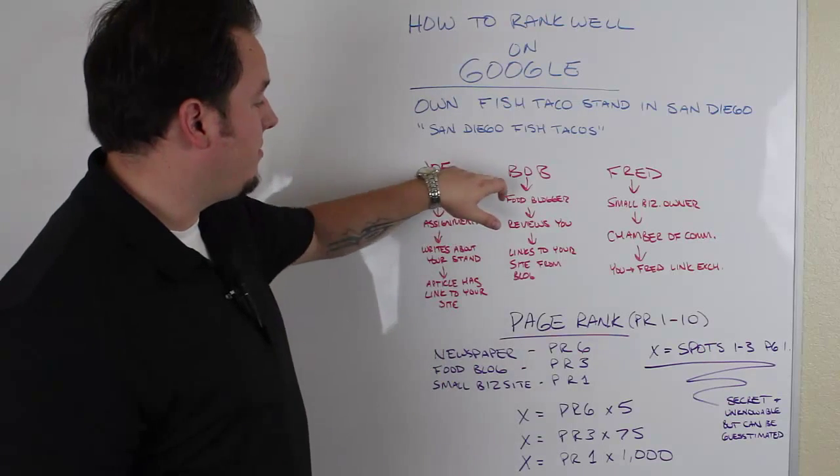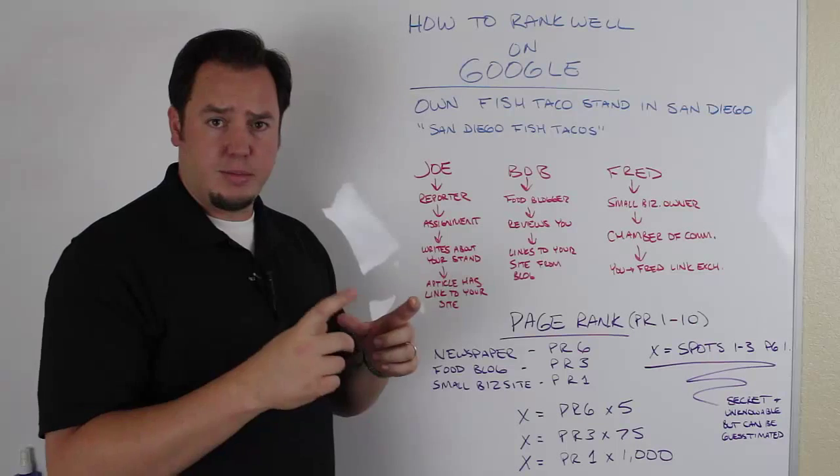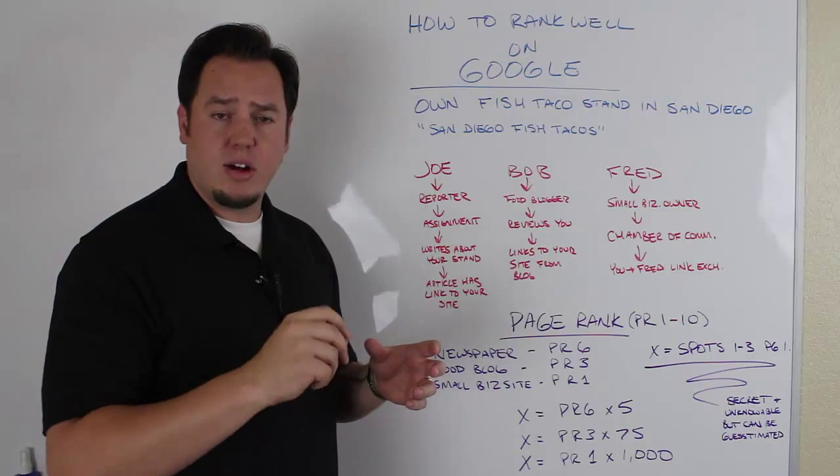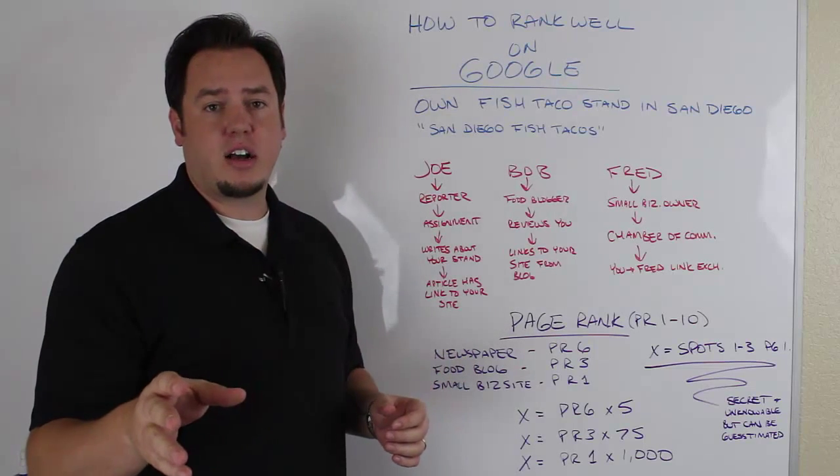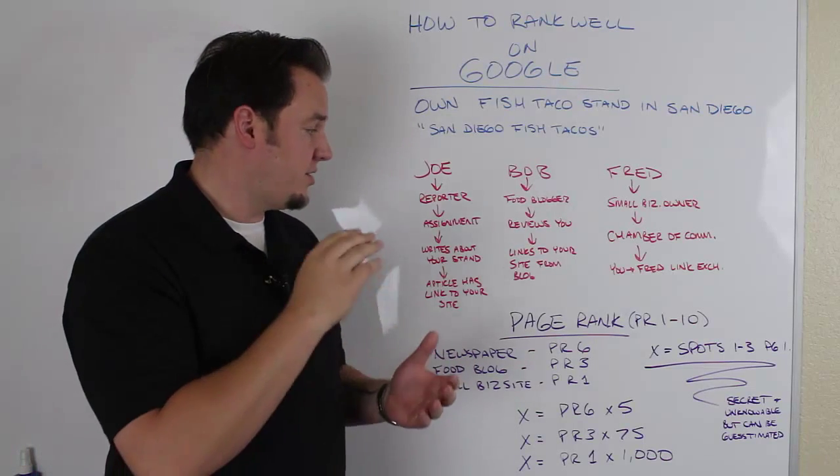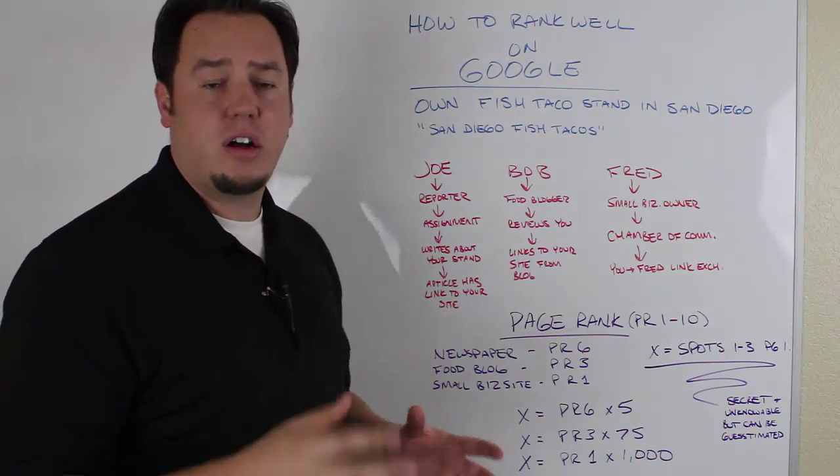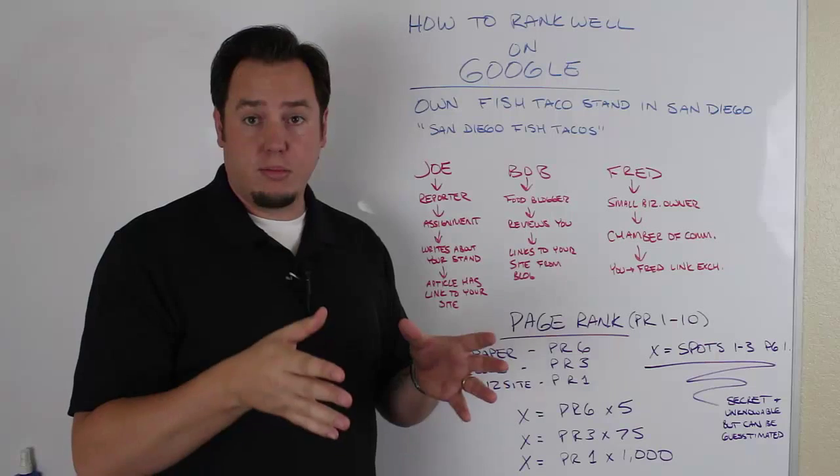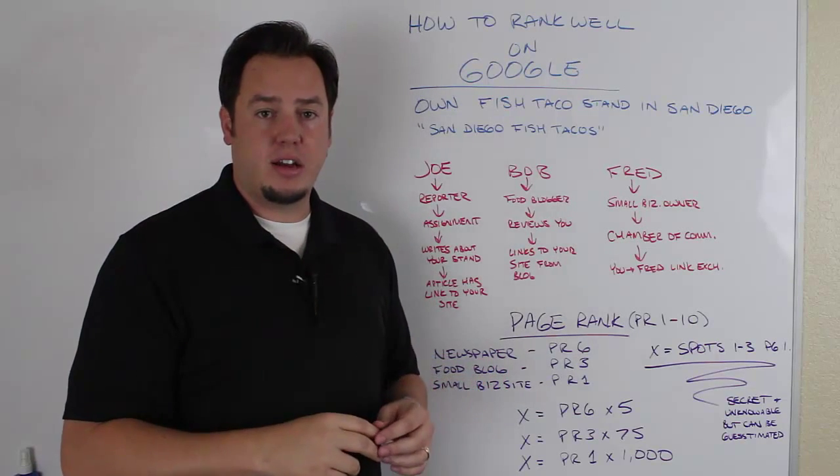The second link is going to come from Bob. So Bob's a food blogger. He does this as a hobby. And he goes around, he takes pictures of the food he's eating, and he writes reviews of it on his personal blog. So he's heard about your fish tacos also. So he comes over to your taco stand, tries it out. They're awesome. And he writes a review about you, posts a picture on his blog, writes a little blurb on his blog about you, and gives you a link back to your website.